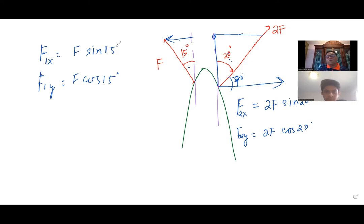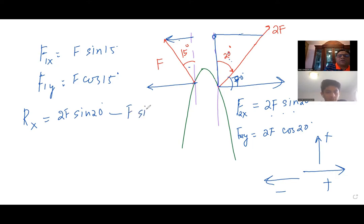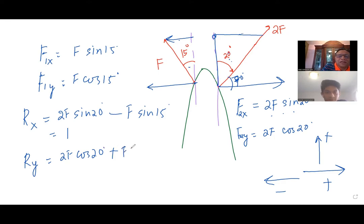So now, what is the resultant? The resultant x component — we add these x components. They're in the opposite direction, so our nomenclature is: right is positive and left is negative. Up is positive. So we write: resultant x = 2F sin 20° minus F sin 15°. You can plug in and calculate the value. Similarly, the y component will be 2F cos 20° plus F cos 15°, because both are pointing up.